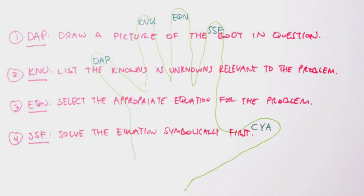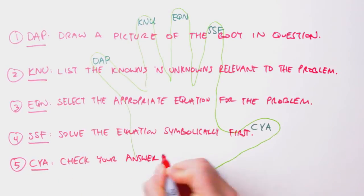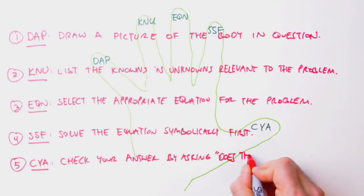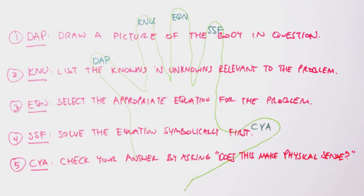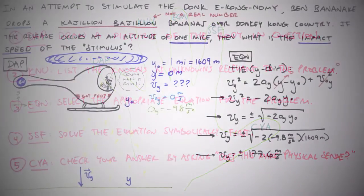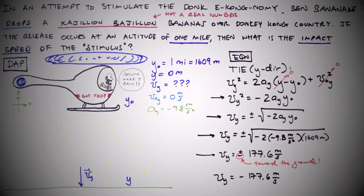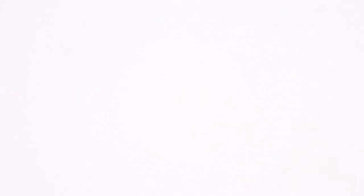Step five: check your answer. No, I don't mean by looking in the back of the book or Googling for solutions. I mean by asking yourself: does this answer make physical sense? Are the units what we'd expect? Is the numerical value physically reasonable? If the answer is negative, does that make sense? Asking and answering these questions is just as important as any other step in the method and will put us on the path to a solid understanding of the material.